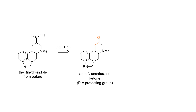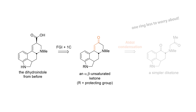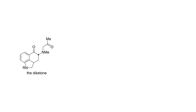Why should we target this ketone? The now-present alpha-beta unsaturated ketone is a keying element for the aldol condensation. This allows us to break up one of the rings and make our problem again just a small step simpler. Let's assume that we can access this diketone from this ketone via an alpha functionalization. That leaves us with this aryl ketone. If you've already taken some chemistry courses, you've probably heard about electrophilic aromatic substitution and the Friedel-Crafts acylation, and this is the perfect opportunity to apply that knowledge.